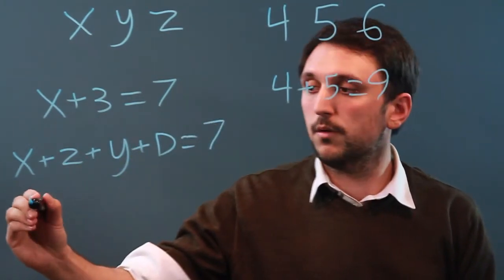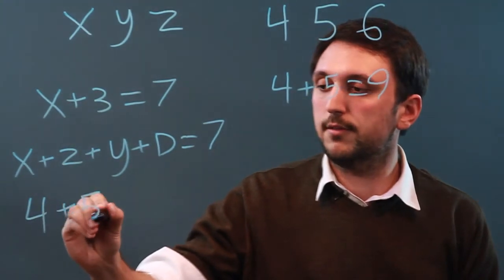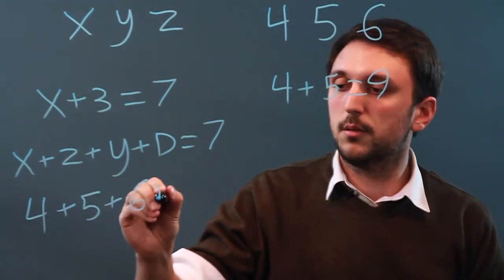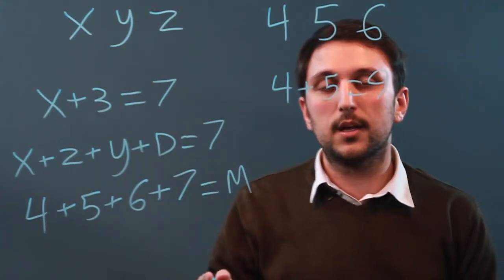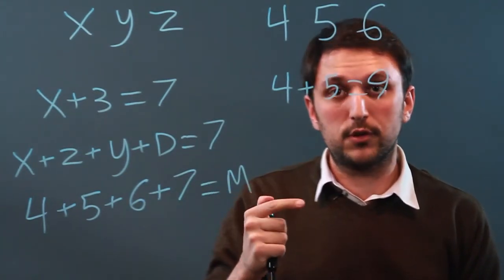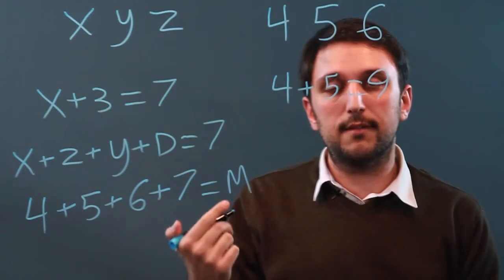This one, 4 plus 5 plus 6 plus 7 equals m, still algebraic. For a non-algebraic expression to be one, it has to have only numbers.